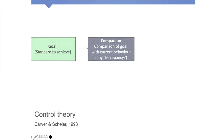We constantly try to get input from our environment about whether we are reaching our goal — we want to compare our goal with our current behavior and see if there's any discrepancy. If I'm giving a lecture and people's heads start nodding and their eyes start closing, I'll start to think about what I can do to wake people up. I might wave my arms around, raise my voice, or tell a joke to try to get people's attention. So we have a goal, then we try and see how we're doing against that in the real world.